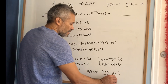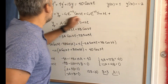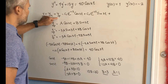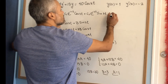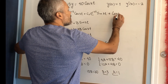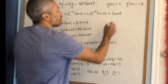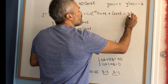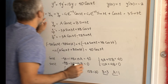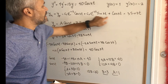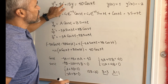We now have our particular solution: A = 1 and B = 3, so the particular solution is cos(3t) + 3·sin(3t). This gives us the general solution of the differential equation.